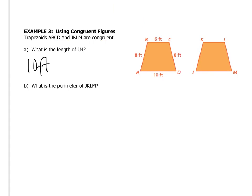And the perimeter of JKLM must be the same as the perimeter of ABCD if the two shapes are congruent, so let's see, that's 10, 18, 24, 32, so 32 feet. If you have any questions, write them down and ask me when you see me next.